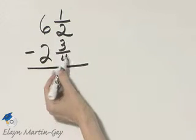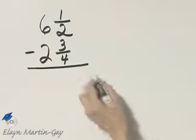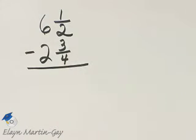Since I'm subtracting the fraction part of the mixed numbers, they have to have the same denominator. So what is my LCD for these two fractions? It would be four.